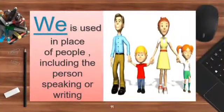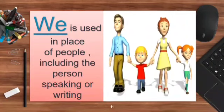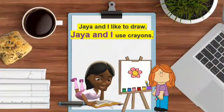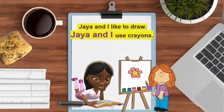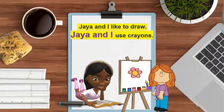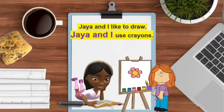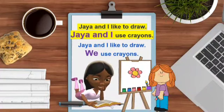Now, children, we is used in place of people including the person speaking or writing. So children, the pronoun we is used when you are talking about yourself and about some other person. Let's see an example. Jaya and I like to draw. Jaya and I use crayons. As we know, when there is a repetition of a noun, we will replace it with a pronoun. So when the word I and the name of another person are together, we will always replace that with we. Jaya and I like to draw. We use crayons.